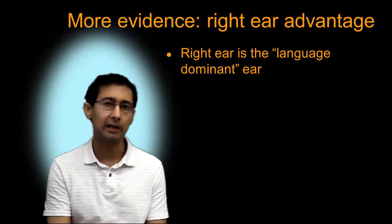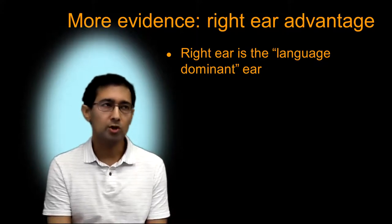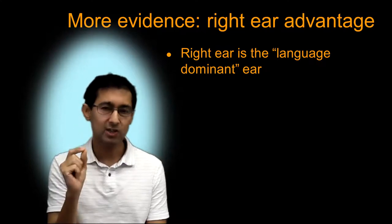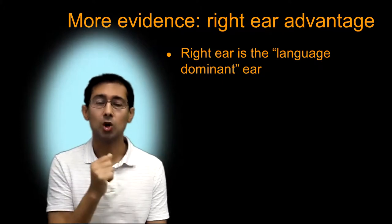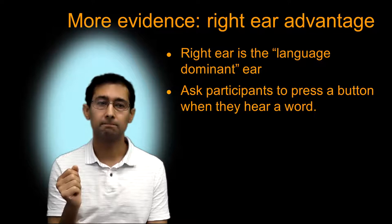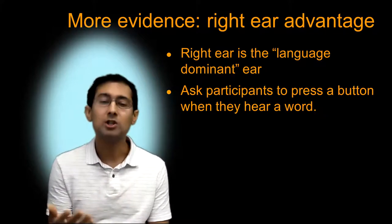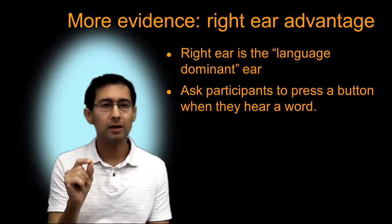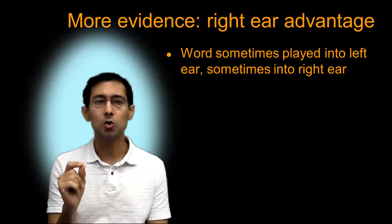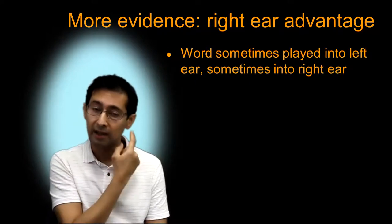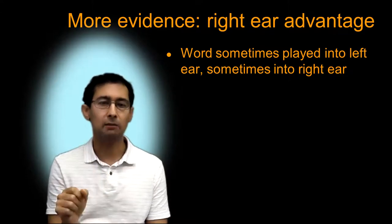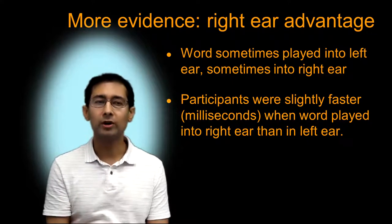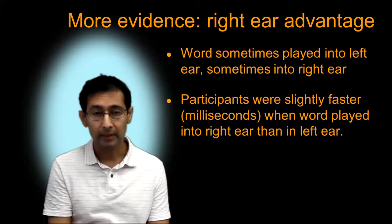That evidence comes from what's called dichotic listening. Researchers have established that language spoken into the right ear is processed just a little bit faster than language spoken into the left ear — so the right ear is considered language dominant. The way you establish this is to ask a participant in an experiment to press a button that measures reaction time, pressing it just as quickly as they hear a word. You play words sometimes into the right ear and sometimes into the left ear, and you measure how quickly they can press the button. Participants on average are just a little bit faster when the word is played into their right ear.